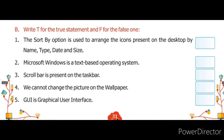Number 1: The Sort By option is used to arrange the icons present on the desktop by name, type, date, and size. It is true, because हम Sort By option का use करते हैं icons को desktop के ऊपर present करने के लिए। इसमें होते हैं हमारे name, type, date और size।